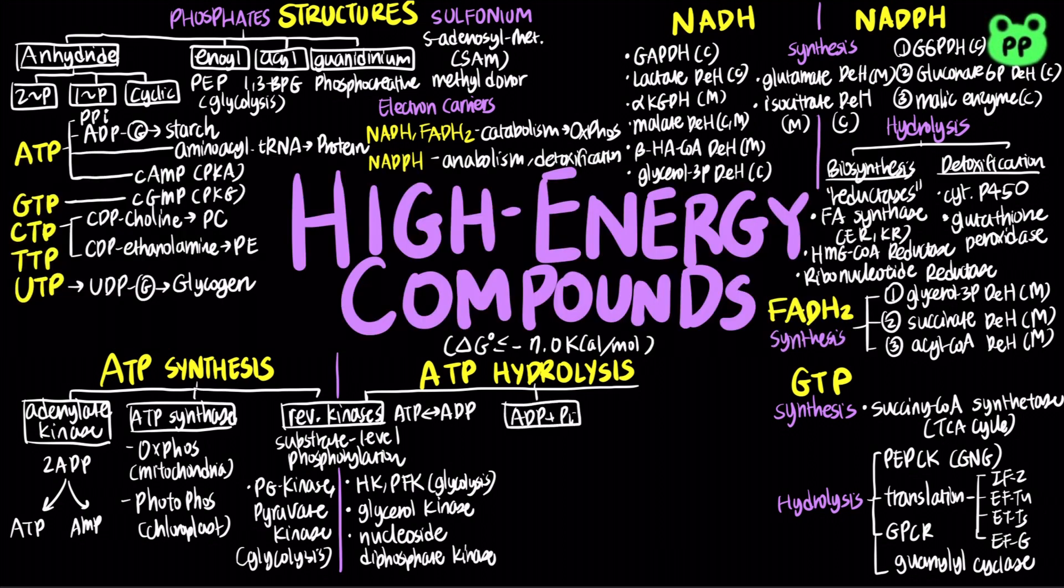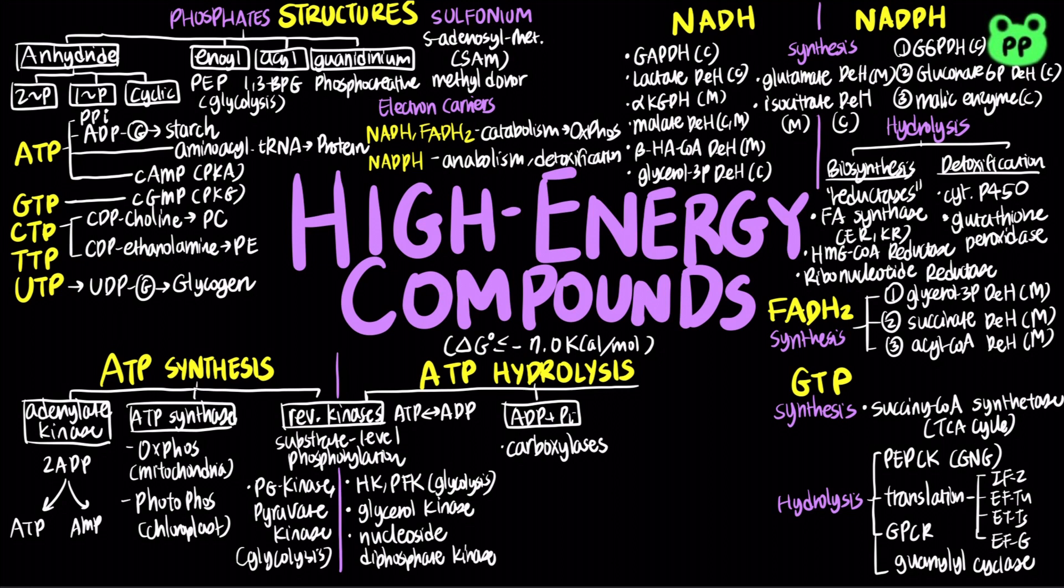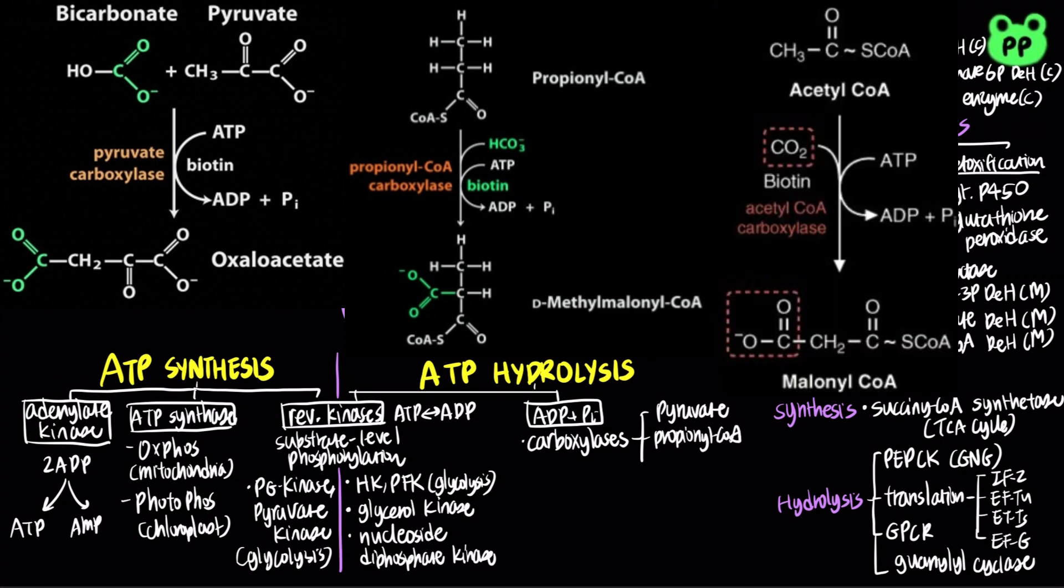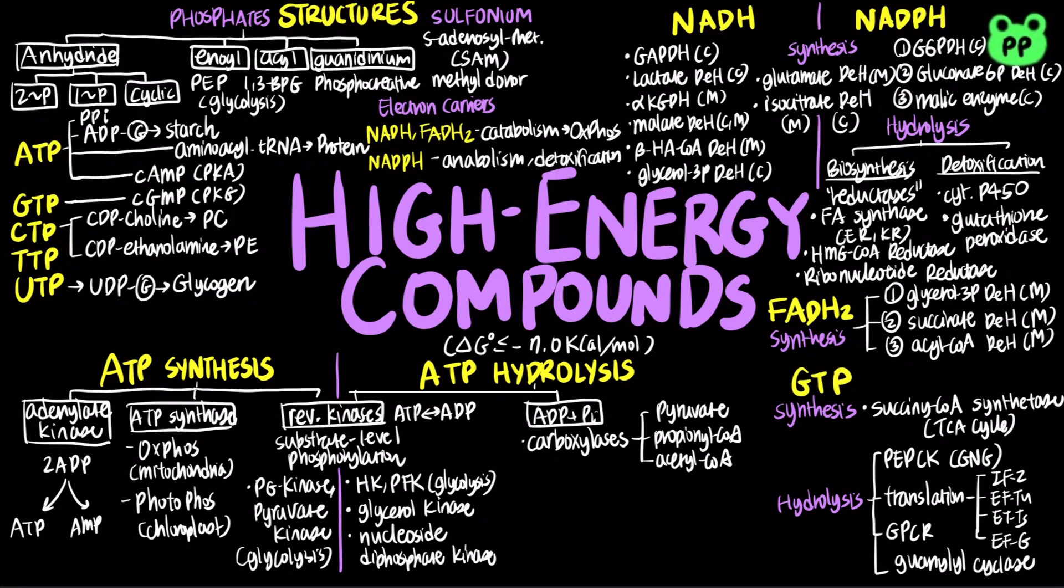ATP hydrolysis to ADP and inorganic phosphate include pyruvate carboxylase, which converts pyruvate to oxaloacetate that serve as an anaplerotic reaction of the TCA cycle. Propionyl-CoA carboxylase converts propionyl-CoA to S-methylmalonyl-CoA, which is part of the catabolic pathway of odd-chain fatty acids. Acetyl-CoA carboxylase synthesizes malonyl-CoA, which is a key step in fatty acid biosynthesis. Lastly, carbamoyl phosphate synthetase, or CPS1, is the key enzyme in urea cycle.